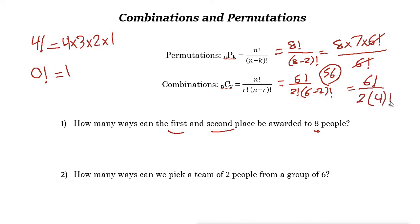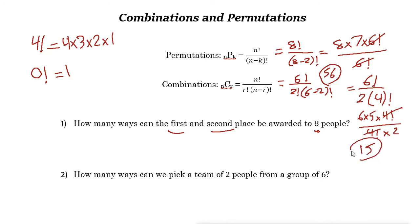6 factorial is 6 times 5 times 4 factorial. The 4 factorials cancel out, leaving 6 times 5 over 2, which is 30 divided by 2, equals 15. So the answer is 15 — there are 15 different ways to pick a team of two people from a group of six.